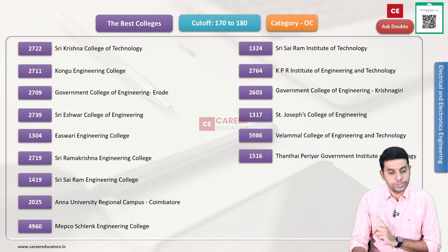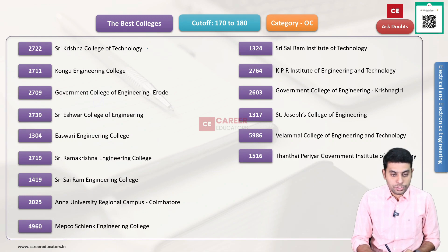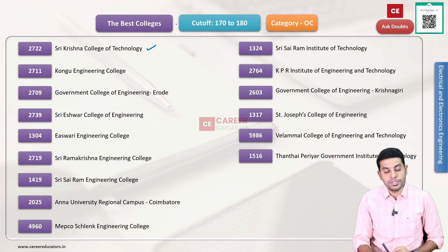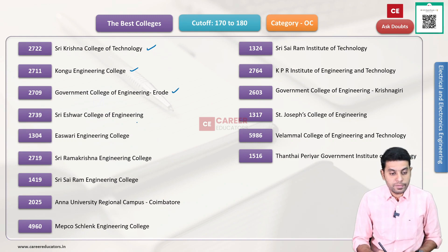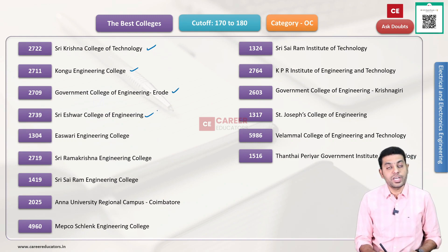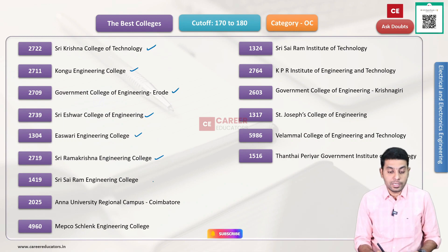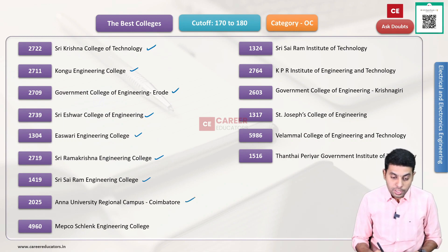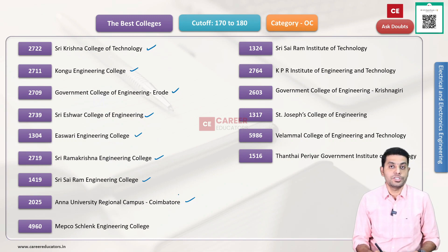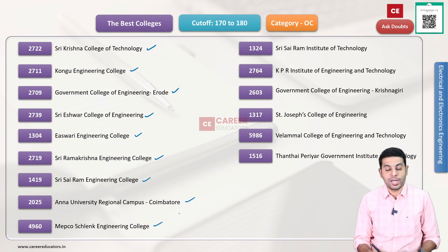First category — we have OC category. College codes: 2722 Shree Krishna College of Technology, 2711 Kongu Engineering College, 2709 Government College of Engineering Erode, 2739 Shree Eshwar College of Engineering, 1304 Ishwari Engineering College, 27193 Ramakrishna Engineering College, 14193 Sairam Engineering College, 2025 Anna University Regional Campus Coimbatore.